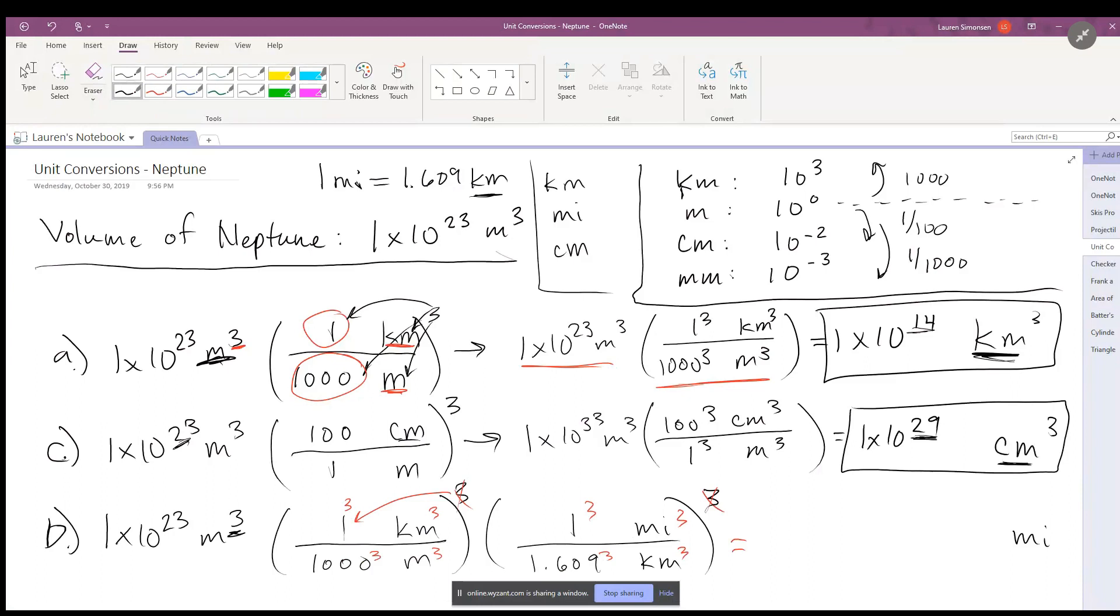And when you calculate that out, that becomes 2.4 times 10 to the 13th miles cubed. Okay, so that is how you do conversions. It's really important in physics, so hope you enjoyed this video.